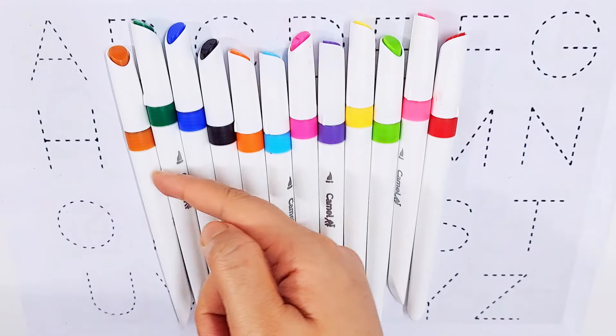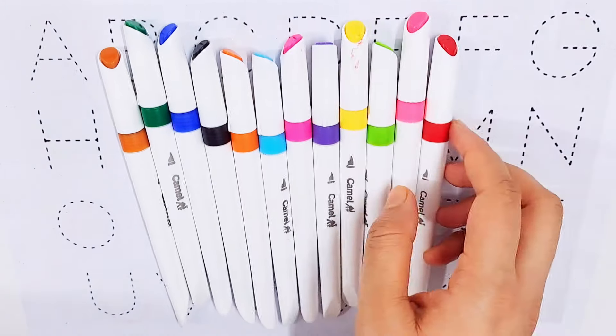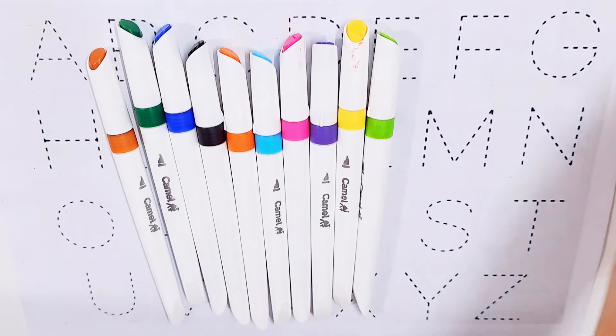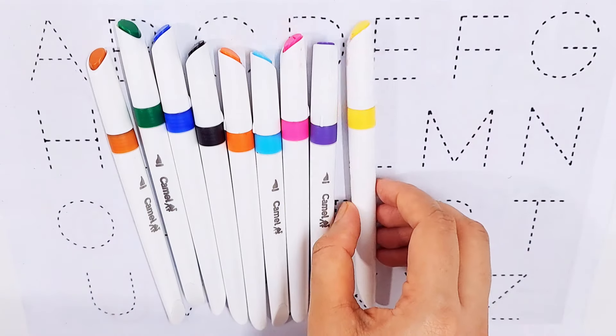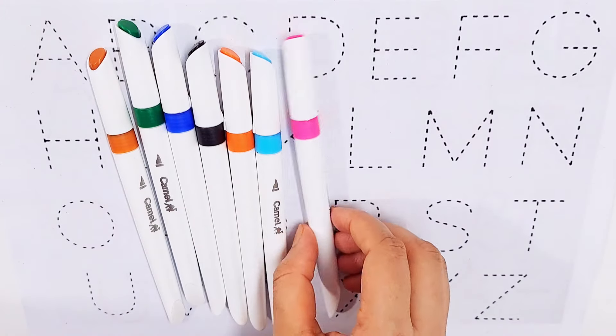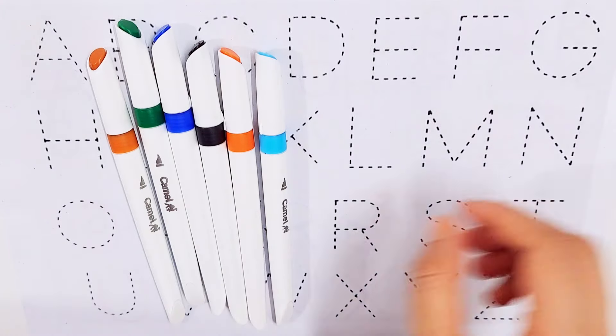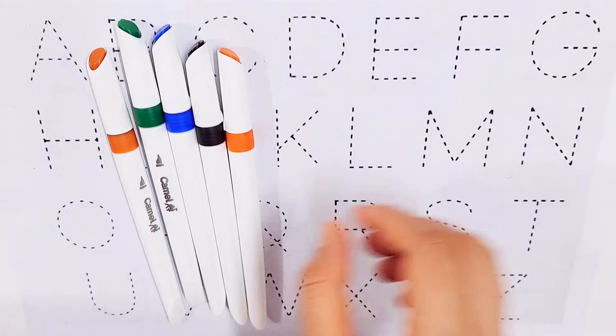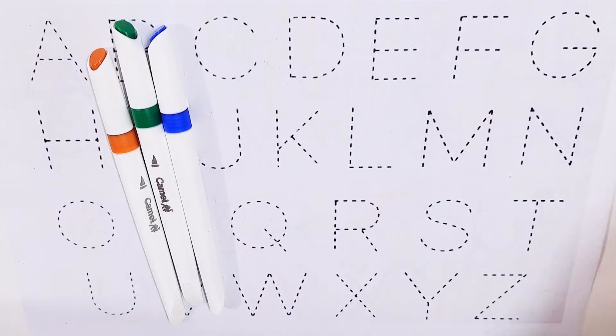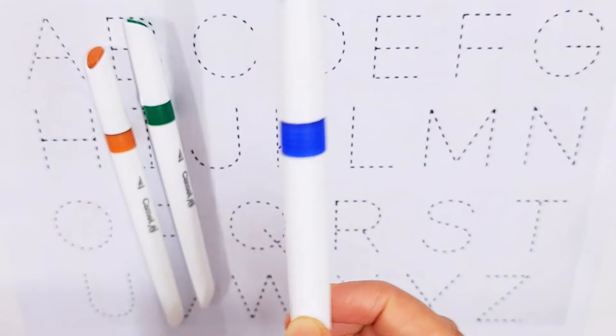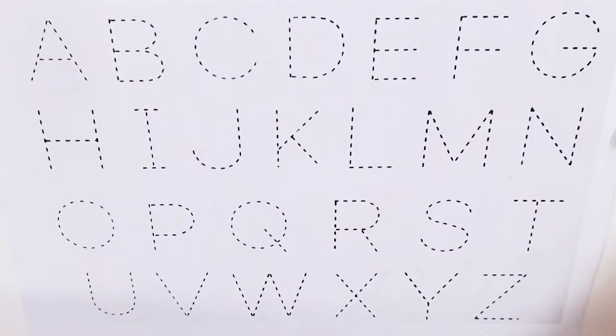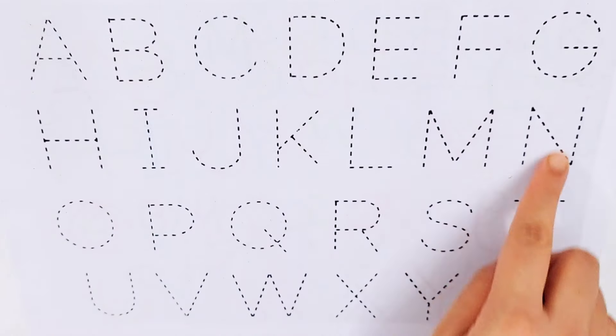Hello kids, let's learn some colors. Red color, pink color, light green color, yellow color, violet color, purple color, sky blue color, orange color, black color, dark blue color, dark green color, brown color. Let's try to learn some alphabets.